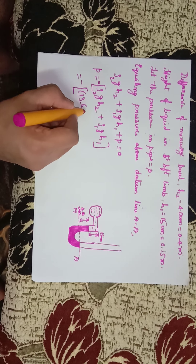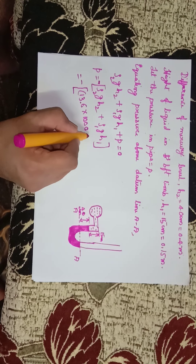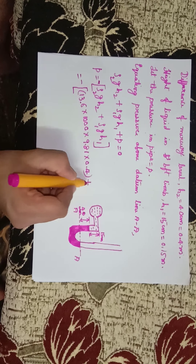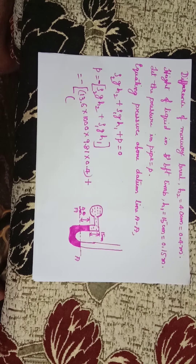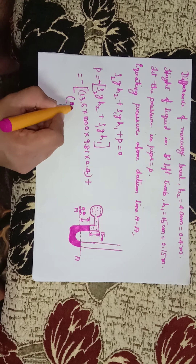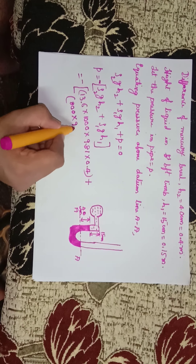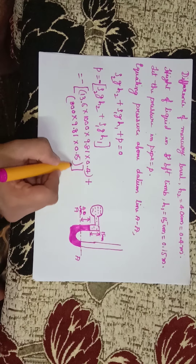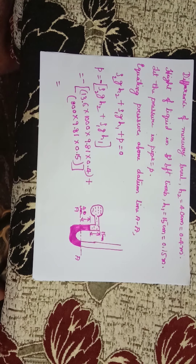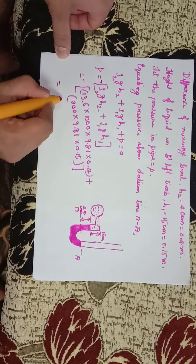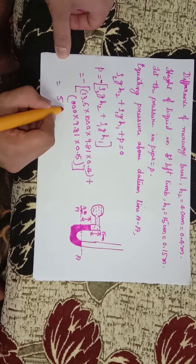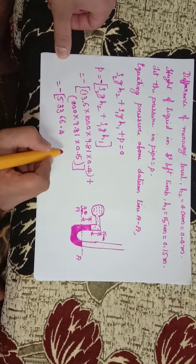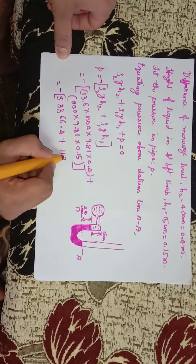Substituting values: p = 13,600 × 9.81 × 0.4 minus 800 × 9.81 × 0.15. This gives 53,366.4 minus 1,177.2.